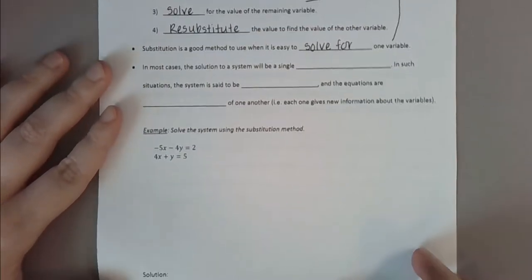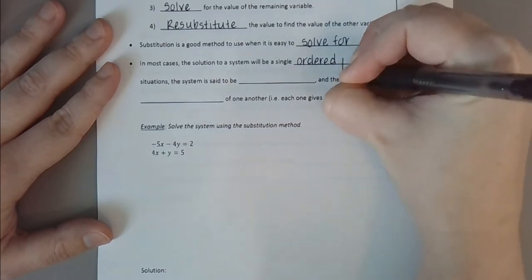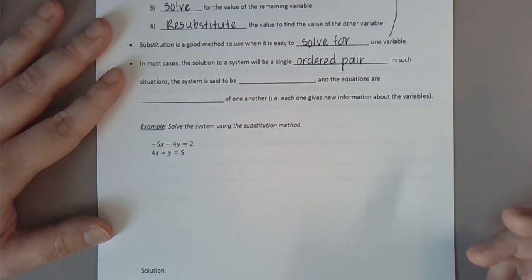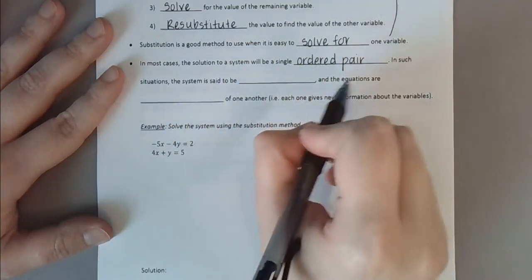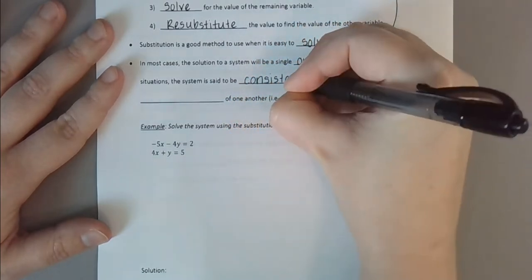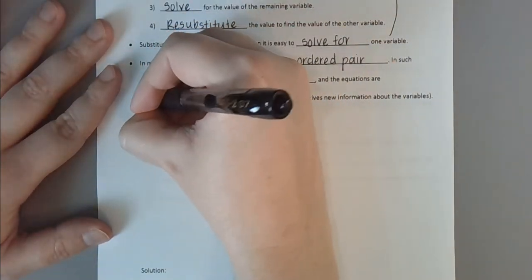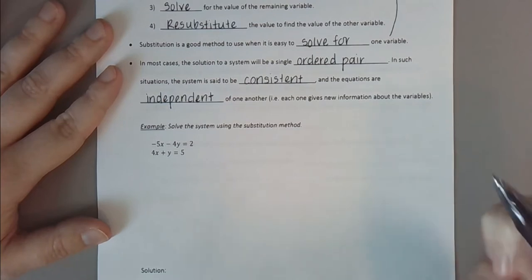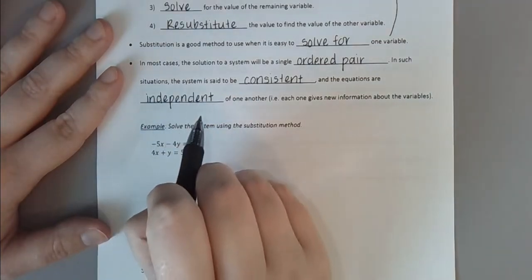In most cases, your solution will be a single ordered pair — a single x value and a single y value. In these situations, we say that the system is consistent, meaning it can be solved and does have a solution. The equations are said to be independent of one another — each individual equation contributes new information to the system about the variables.